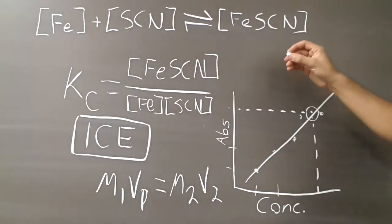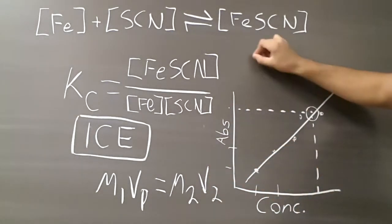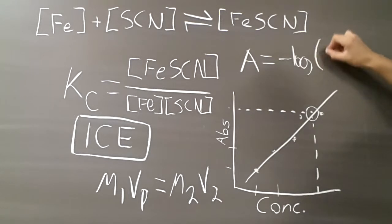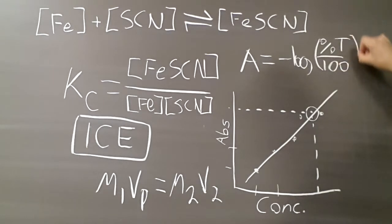Alright, and if you have transmittance, you just need to use the equation: absorbance equals the negative log of percent transmittance over 100. And that's how you convert into absorbance.